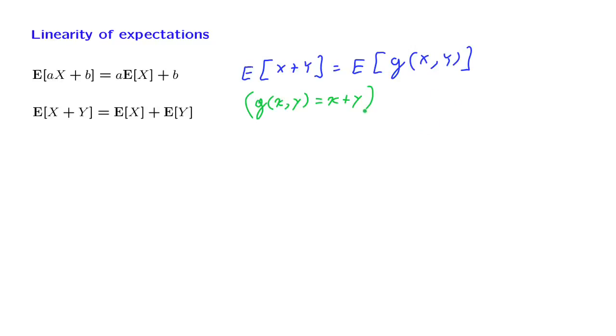So now we can continue with the application of the expected value rule, and we obtain the sum of all possible x, y pairs. Here we need to write g of x, y. But in our case, the function we're dealing with is just x plus y. And then we weigh according to the entries of the joint PMF. So this is just an application of the expected value rule to this particular function.